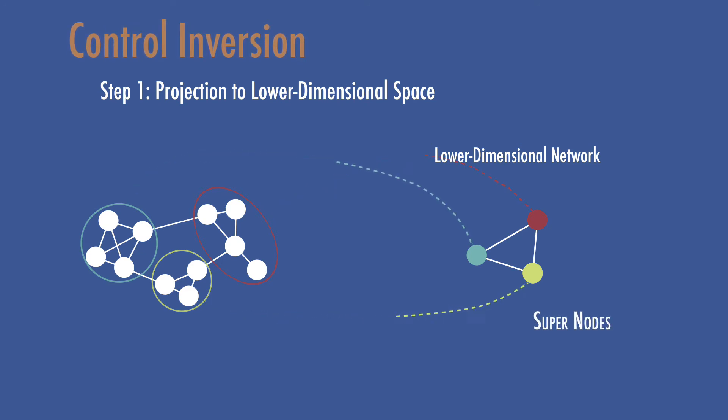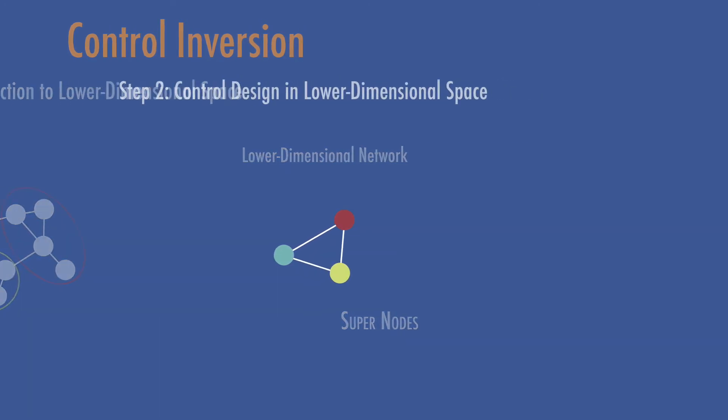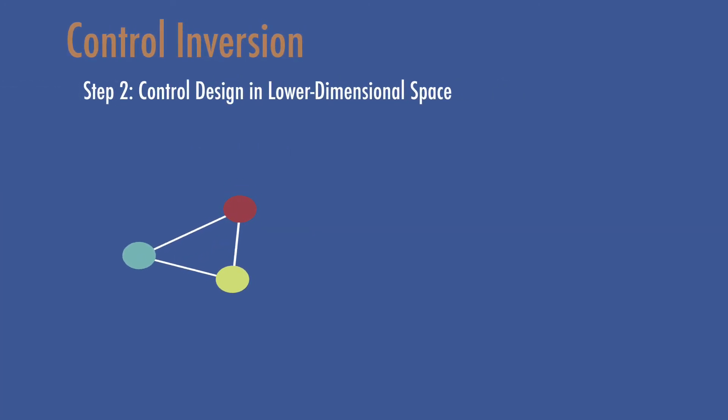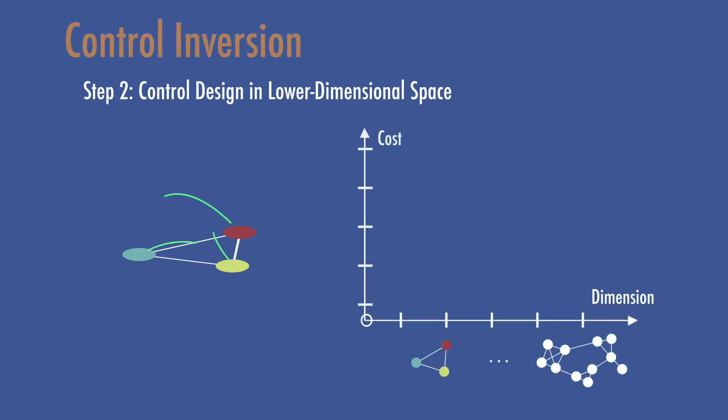Clusters in the original network thus become super nodes in the reduced order network. The second step is to design a controller for these super nodes. Since this system has a much lower dimension than the original, the control design becomes numerically cheap and easy to track.